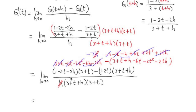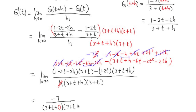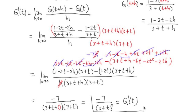Now we can plug in 0 for h. On the top we have negative 7, and the denominator becomes (3 plus t plus 0)(3 plus t), which is just (3 plus t)(3 plus t), or (3 plus t) squared. So the derivative g prime of t equals negative 7 over (3 plus t) squared. This is the derivative found using the definition of derivative.